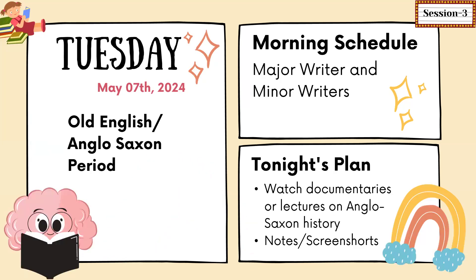The next day, Tuesday, follow the same approach but different content. Take up major writers and minor writers of the Old English period. In the evening, you can again watch related videos. But particularly, make sure you take out notes — if you are a final year student, take screenshots as well.